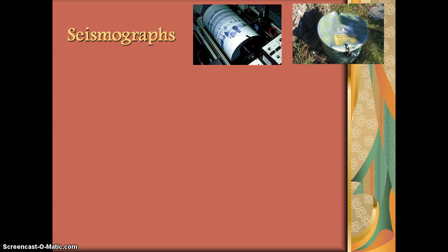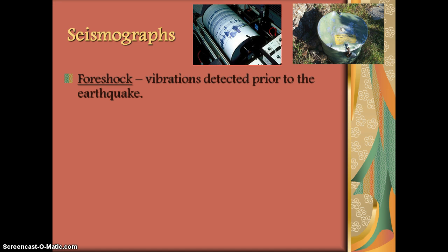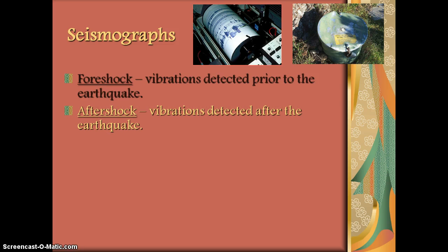Seismographs are useful for detecting seismic energy. We can use these to detect when an earthquake may occur. Foreshocks are the initial seismic readings that come in that tell us that an earthquake is about to happen. Once the earthquake has happened, afterwards we have aftershocks. Aftershocks can be very powerful depending on the strength of the earthquake. The 2011 Japan quake had aftershocks of sevens and eights because of the initial earthquake being so strong.